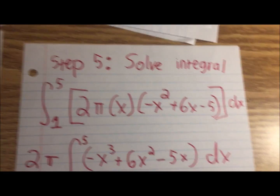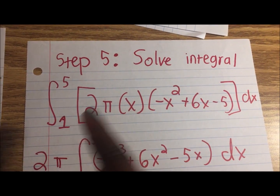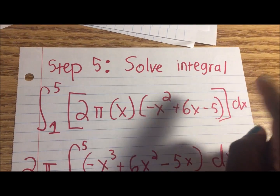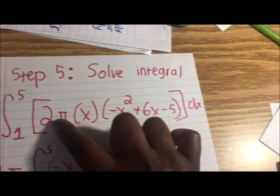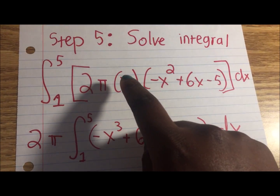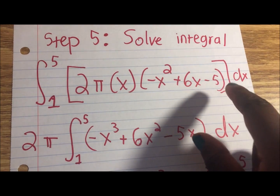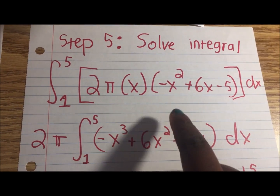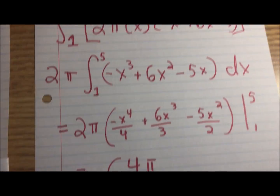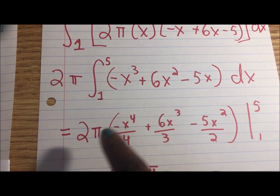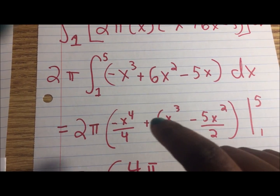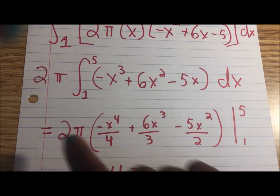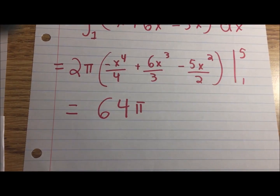Let's go ahead and do step five — solve the integral. The integral is from 1 to 5 of 2πx(−x² + 6x − 5) dx. I take the constant 2π out and multiply x through: that gives −x³ + 6x² − 5x dx. Integrating gives 2π[−x⁴/4 + 6x³/3 − 5x²/2] evaluated from 1 to 5. When you evaluate this, you get 64π as the answer.